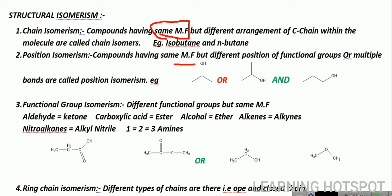Position isomerism — compounds having the same molecular formula but different position of functional group or multiple bond are called position isomers. If we look at this OH group, which is the alcoholic group, it is on the second position of carbon. This is the first carbon, this is the second carbon, and this is the third carbon. In both these structures the OH is on the second position, so they are the same. But in the third molecule, we have the OH group on the third position. So these molecules are position isomers.